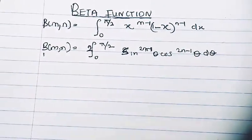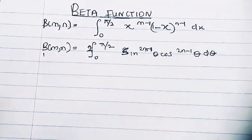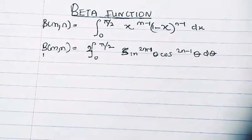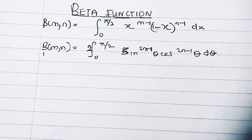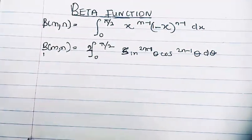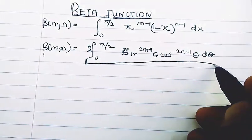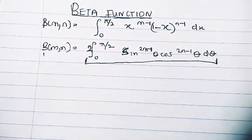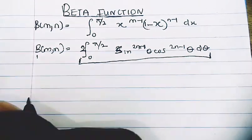Now we're going to be proving a third formula. In this formula, we are not going to have an integration sign, so I call it a simpler formula of the beta function. I'm going to be taking just the integral here and leaving the constant, because I'm going to derive the formula.